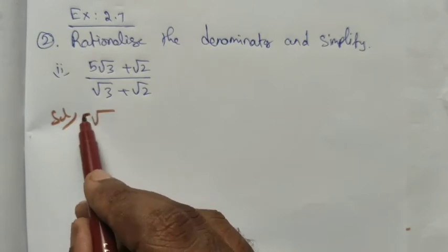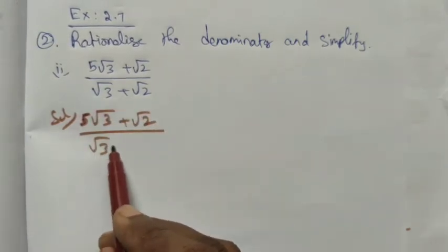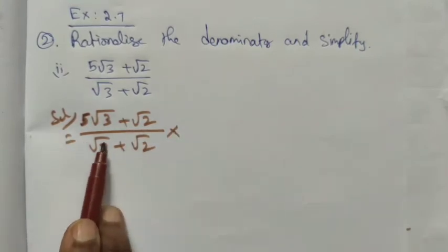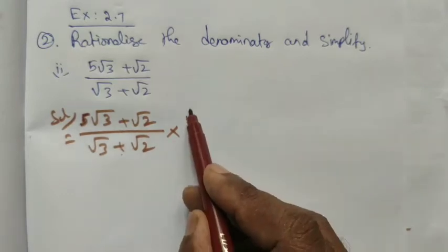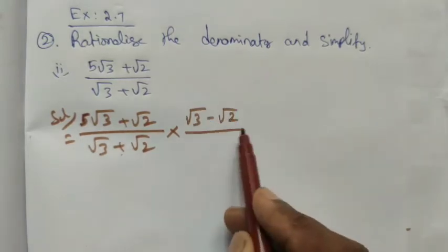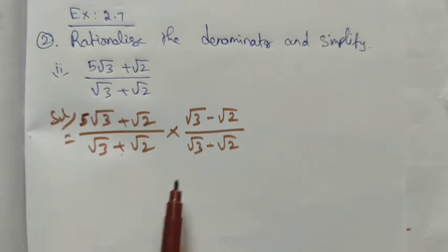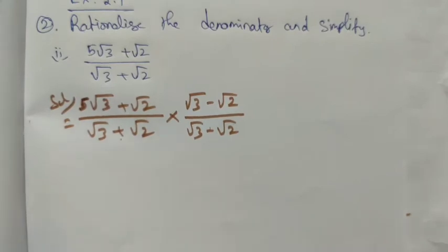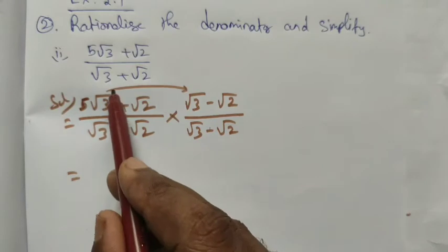For this number (5√3 + √2) / (√3 + √2), we take the conjugate. The denominator has a plus, so we change it to minus: (√3 - √2) / (√3 - √2). We multiply the same number both in numerator and denominator so it does not affect anything.